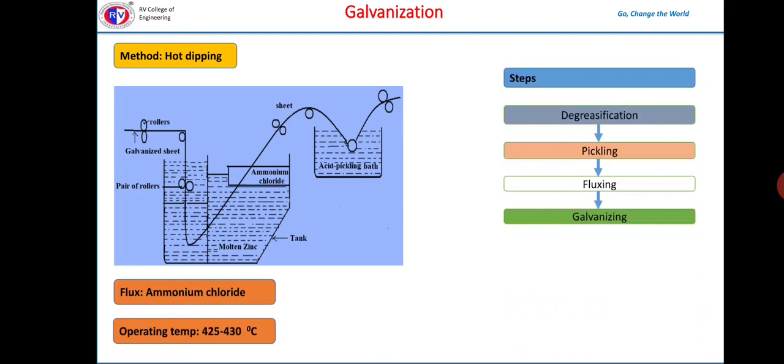In the next stage, the article is then dipped in a bath containing molten zinc maintained at 425 to 430 degrees centigrade and covered with a flux of ammonium chloride to prevent the oxidation of molten zinc. The excess of zinc on the surface is removed by passing through a pair of hot rollers which wipes out excess of zinc coating and produces a thin coating.